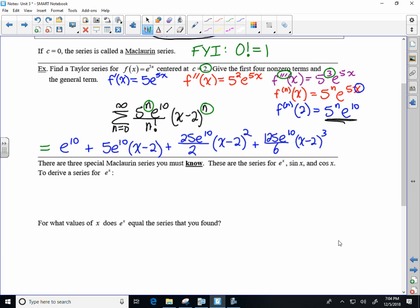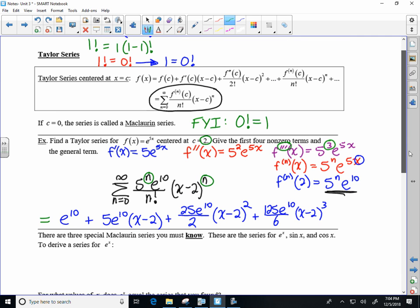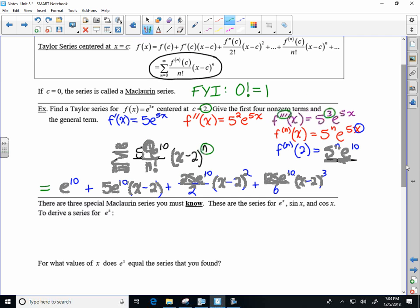So anyway, three special Maclaurin series that you have to know. They're so important. We're centering it around 0. You can build it off of the Taylor series, but again, specifically for c equals 0, because that's the Maclaurin case.